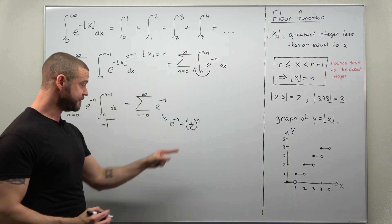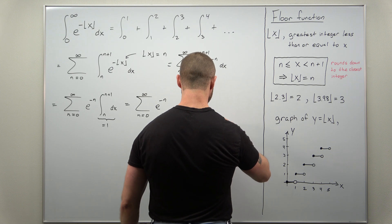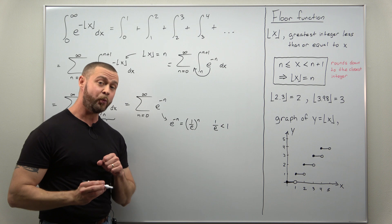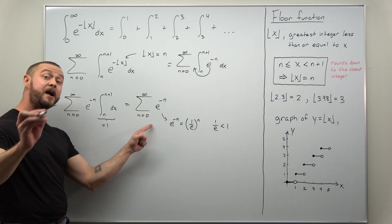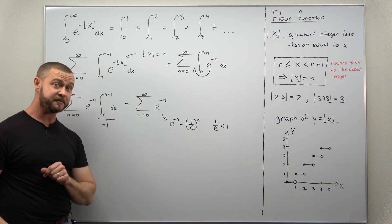Now the benefit of this, the ratio for this geometric series, 1 over e, that's less than 1 and that implies that our geometric series is convergent.